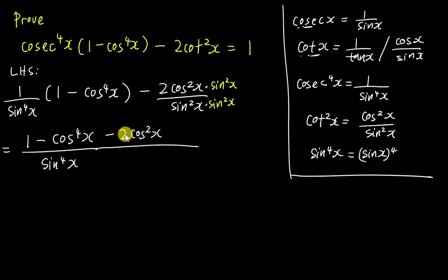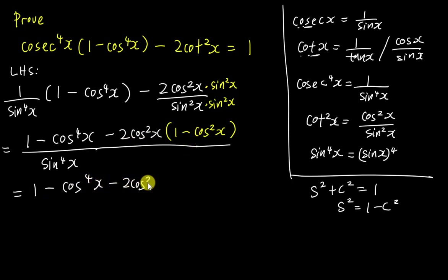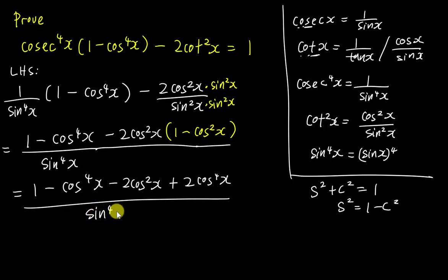Why change sine squared to 1 minus cos squared? Because on the numerator everything is in terms of cos, so it's good to keep everything in cos. This comes from the Pythagorean identity: sine squared x plus cos squared x equals 1, so sine squared x equals 1 minus cos squared x. After expanding minus cos squared into both terms, I get 1 minus cos power 4 x, minus 2 cos squared x, plus 2 cos power 4 x, all over sine power 4 x. I'll write sine power 4 x as sine squared x times sine squared x for the next step.